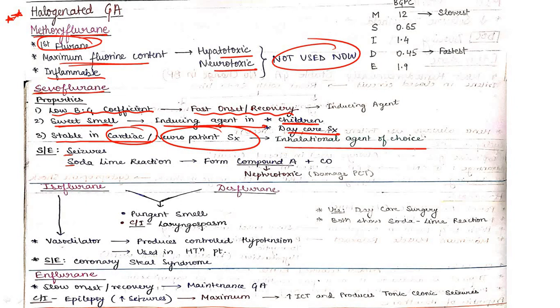Sevoflurane side effects: S for seizures, gives soda lime reaction so cannot be used in closed circuit. Due to soda lime reaction it forms compound A which is nephrotoxic and damages PCT. This is important - it's anesthetic agent of choice used in children and daycare surgery.